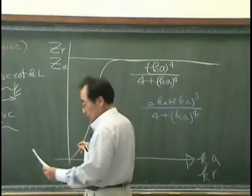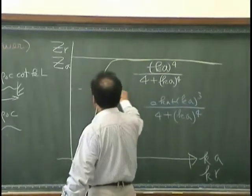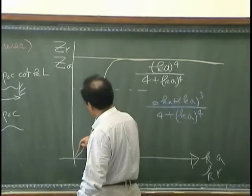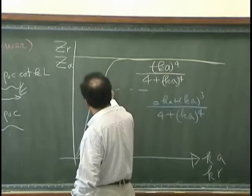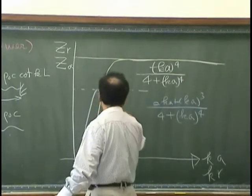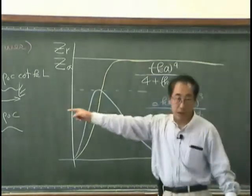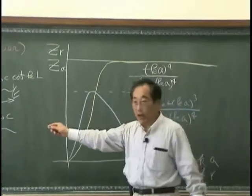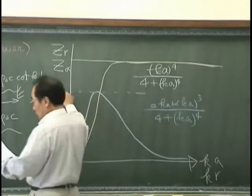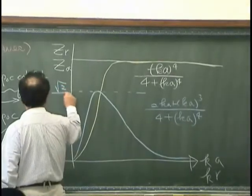And that will behave a little bit different compared with what we have for the breathing sphere. And the value over here is square root of 2.